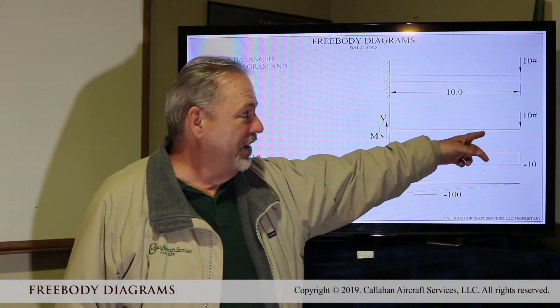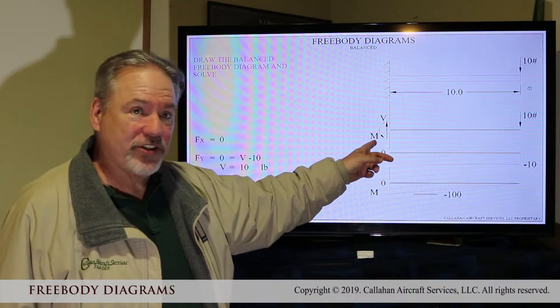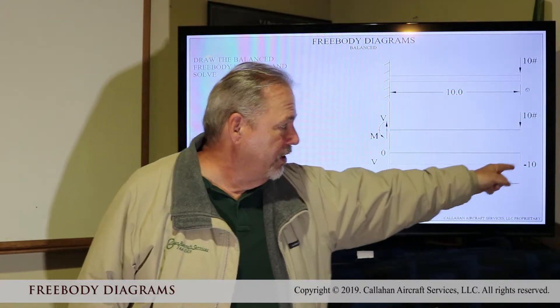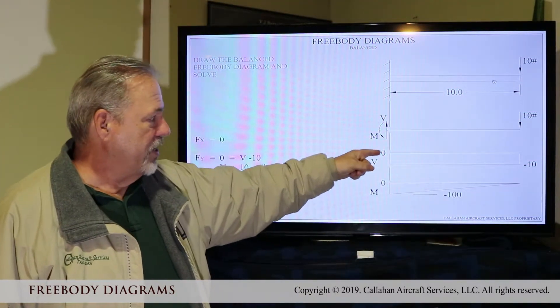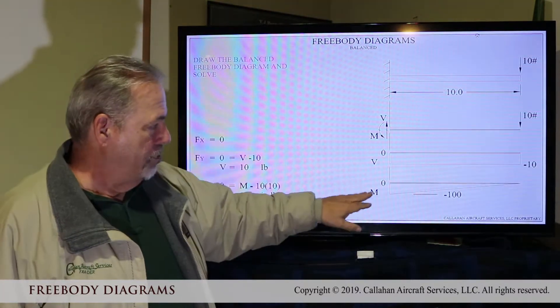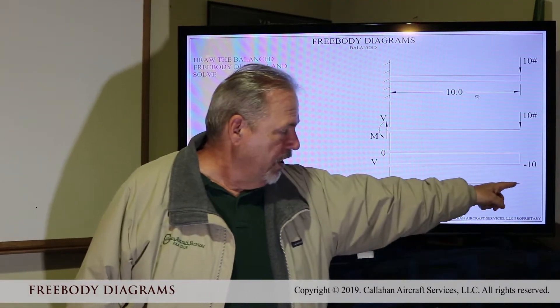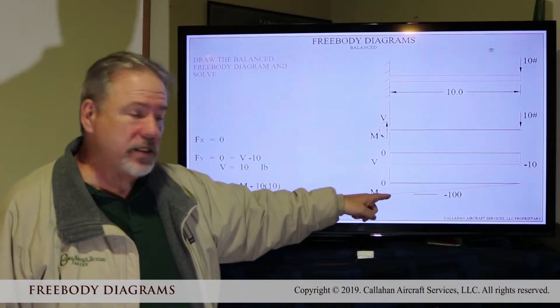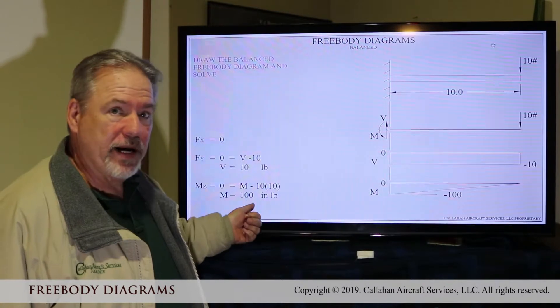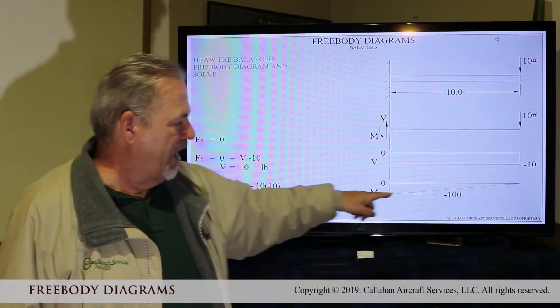Here's your free body. The reactions, we solve for the reactions of ten pounds down, constant ten pounds up, so V is ten pounds. Your moment gradually increases as you get to the base to a hundred inch pounds. It's constant.